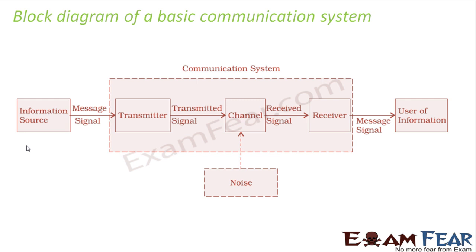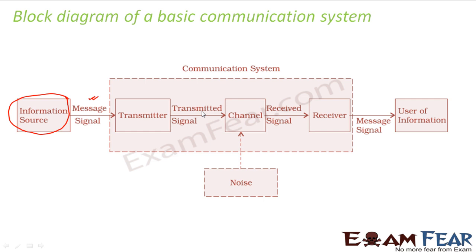Here you have the information source — this is where the entire information is going to come from. From the information source, the information comes in the form of a message signal. We call this input signal the message signal. This message signal comes to the transmitter. The transmitter will convert it into a form which is capable of being transmitted and then send it. This is the transmitted signal. Now this signal is passed through a channel and then received by the receiver.